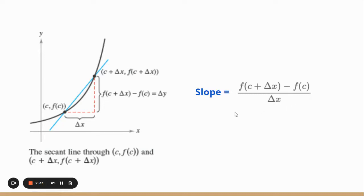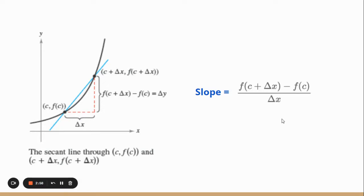That is the slope of the secant line, and we're going to use that to approach the tangent line. We need calculus to get there because right now we have a delta x in the denominator. For the slope of the tangent line there's no change in x, which would make delta x zero — and a zero in the denominator causes a problem. So in comes calculus and the limit process. This is the definition of the derivative of a function: f prime of x equals the limit of that slope expression as delta x approaches zero. We can't be exactly at zero, but we can approach it, and it gives us the slope.